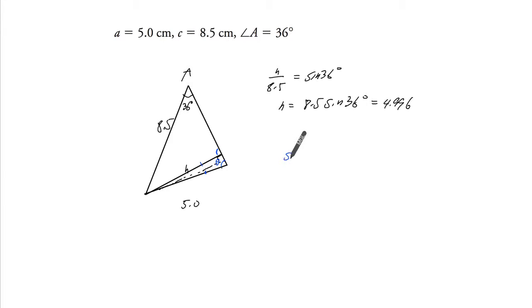So sine of theta over 8.5, that's the opposite side, will have to equal 5, or sine of 36 over 5, by sine law.